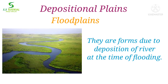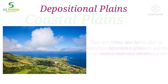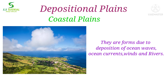When sediments, soils, mud, etc. are deposited on both sides of a river due to river flooding and form a plain land, it is called a flood plain. The Lower Ganga Plain is an example of a flood plain. When sediments, sand, and silt are deposited at the edge of a continent due to ocean waves, ocean currents, winds, and rivers and form plains, they are called coastal plains.